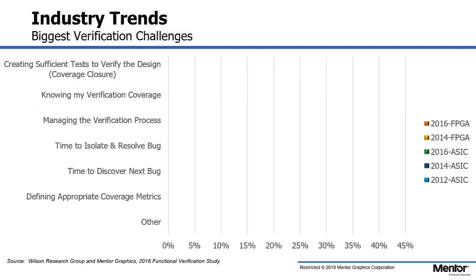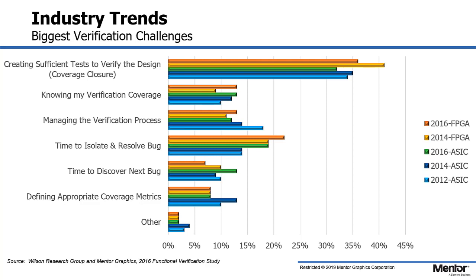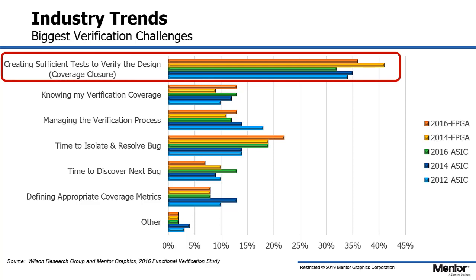First, a little bit of background. For the past several years, Mentor has commissioned a biannual industry survey to see what issues users are facing. The survey is quite extensive, but one question in particular that we asked is: what is your biggest verification challenge? We separated the responses between ASIC and FPGA teams. And as you can see, by far the most common response was that the biggest challenge was in creating a sufficient number of effective tests to reach coverage closure. And that's not really surprising considering everything that goes into verifying an SOC design today.